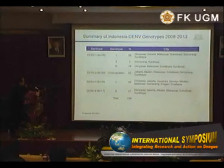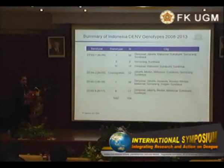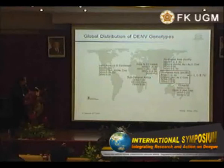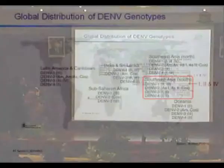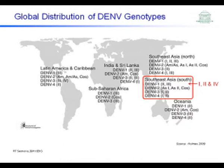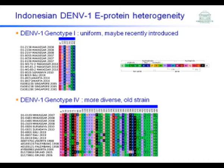In summary for the genetic data, we have data on serotype distribution and genotype distribution. There are three genotypes of dengue 1, and single genotypes for dengue 2, 3, and 4. These are the cities where they are circulating at the moment. But there is still much to do to fully understand the genetic characteristics of dengue in Indonesia, and this information contributes to the global data — dengue 1 is not only genotype 2 and 3, but also genotype 1 and 4 in Indonesia.